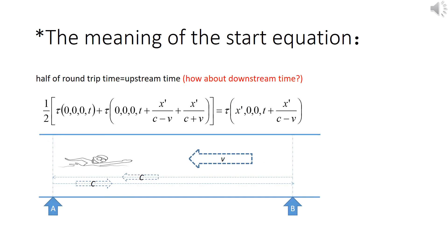Before we end off this video, I will explain one other thing. So earlier, we showed the first equation of special relativity but did not really explain the meaning of it. Here is the meaning: half of the round trip is equal to the upstream time. To strictly represent this meaning, the direction of water flow in our example has to be in the opposite direction.